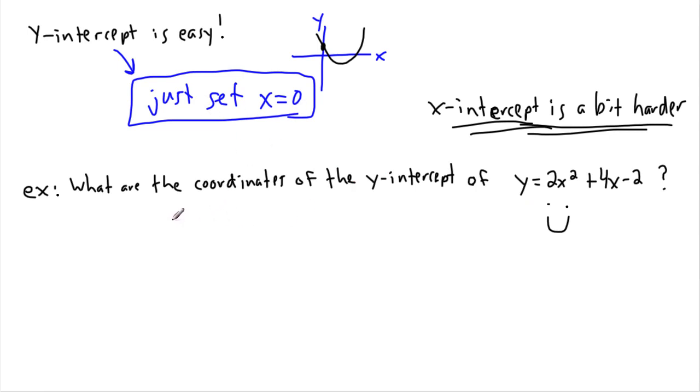How does it go? What's the y-intercept? I just set x equals zero. In my equation, y equals, and I just put in a zero wherever I see the x's. This cancels out because zero squared is zero, zero times 2 still zero, 4 times zero still zero. So it's just y equals minus 2.